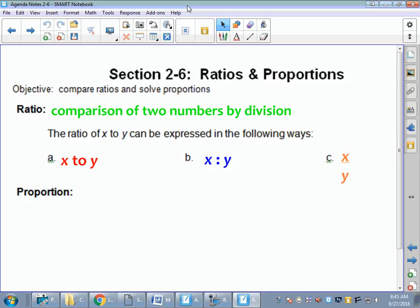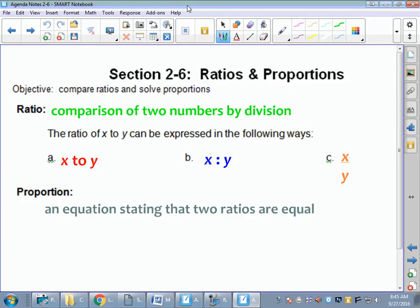So a ratio is one fraction. A proportion is an equation. So we know we've got an equal sign stating that two ratios are equal. A proportion looks like two equal fractions or ratios.